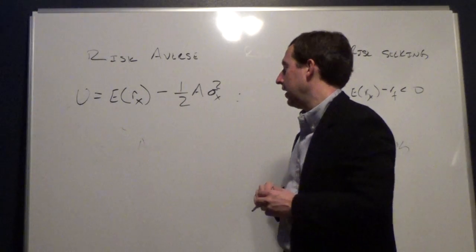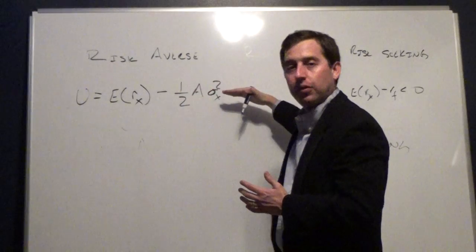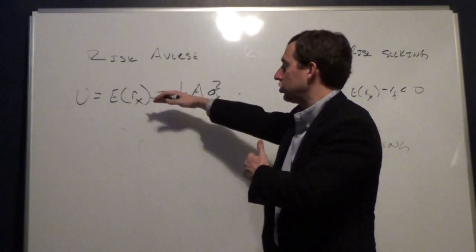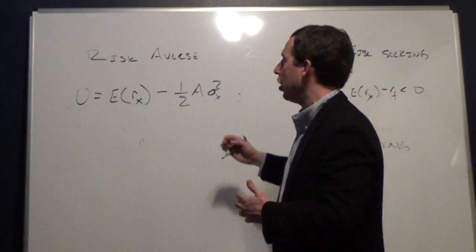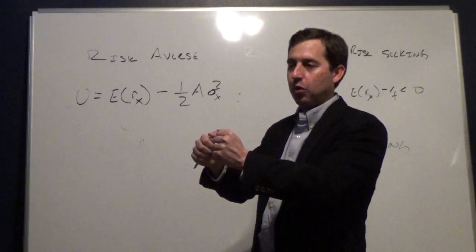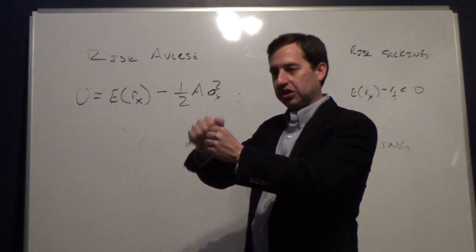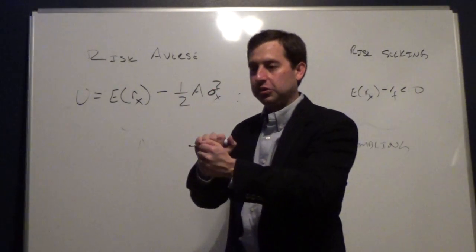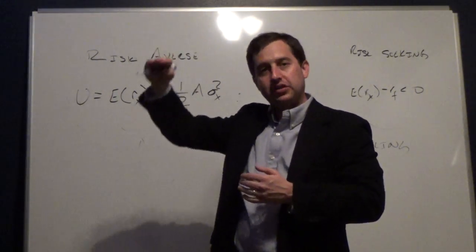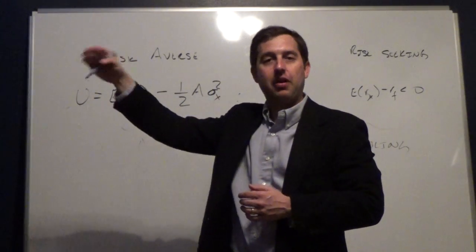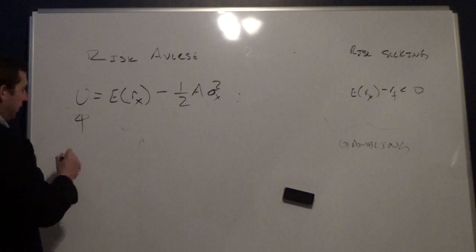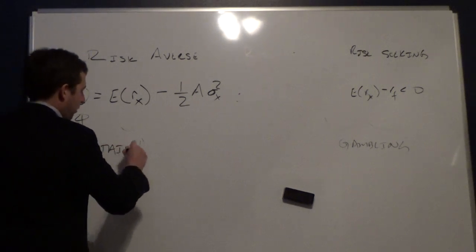This utility framework allows us to compare investments across many different risky portfolios. It adjusts each portfolio for risk, and the resulting utility value is often called the certainty equivalent rate. What this does is effectively take the risk out of each portfolio so we can compare it to the risk-free rate — or to any other portfolio — allowing us to rank portfolios by preference.